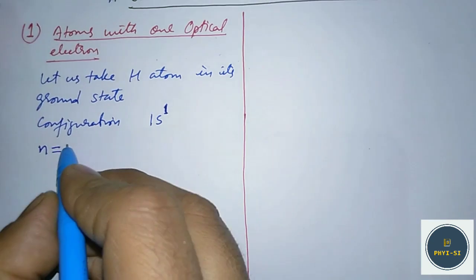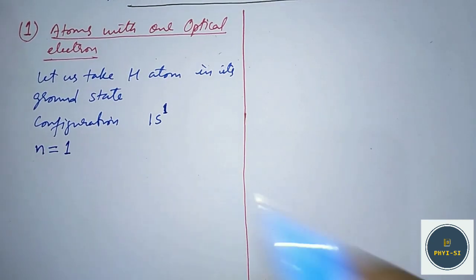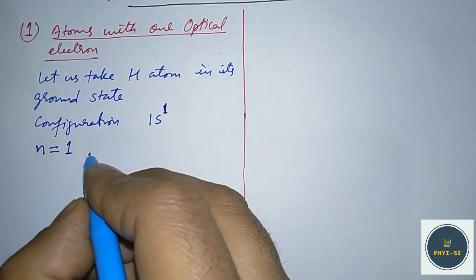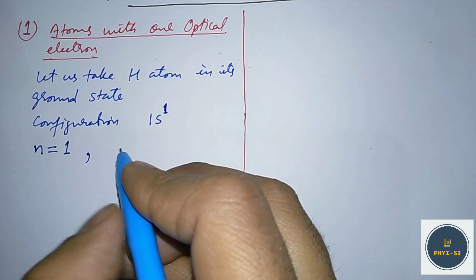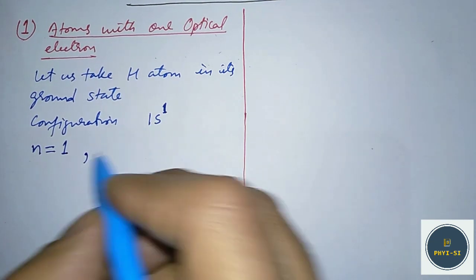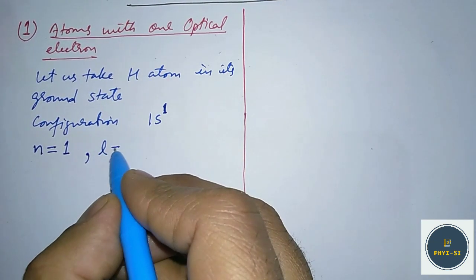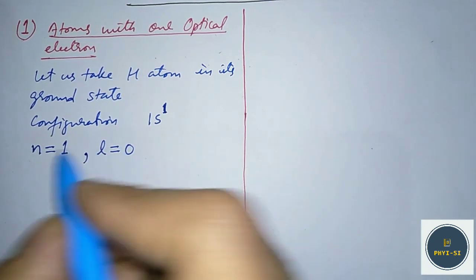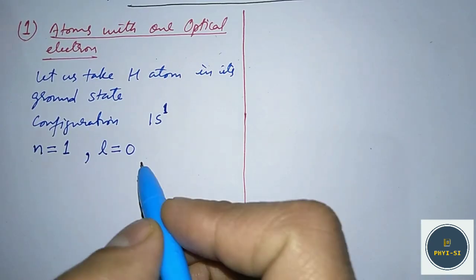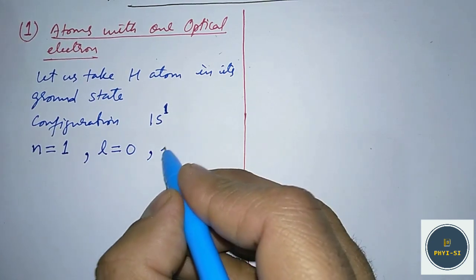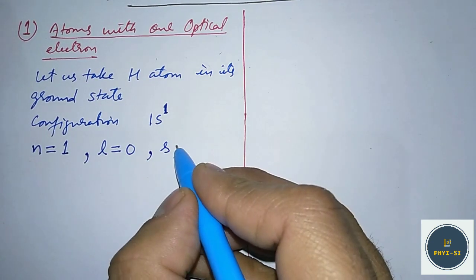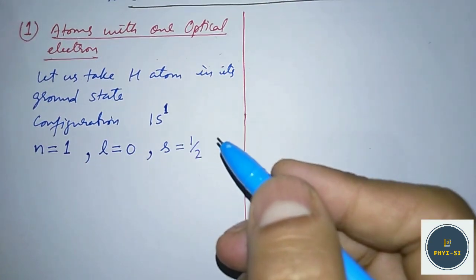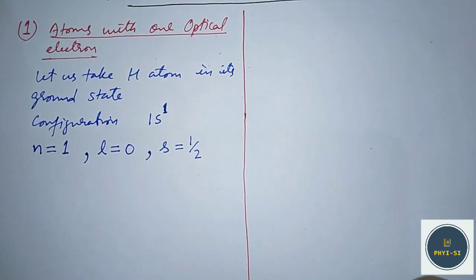Let us write the various quantum numbers for this state. The principal quantum number n is equal to 1. The azimuthal quantum number l is equal to zero, because if n equals 1 then l should be zero. The spin quantum number s is equal to 1/2 because we have just one single electron.